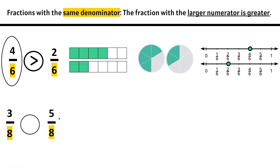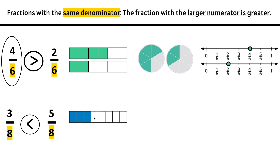Let's compare 3/8 to 5/8. We know that they have the same denominator, 8. Now let's look for the larger numerator, which will be the greater fraction. 5 is greater than 3, so 5/8 is greater than 3/8. Or we can say 3/8 is less than 5/8. Let's create a model: 1, 2, 3, 4, 5, 6, 7, 8 equal parts — we have 1, 2, 3/8 of them. Here we have another whole with 8 equal parts, and we have 1, 2, 3, 4, 5/8. We can clearly see that 3/8 is less than 5/8.